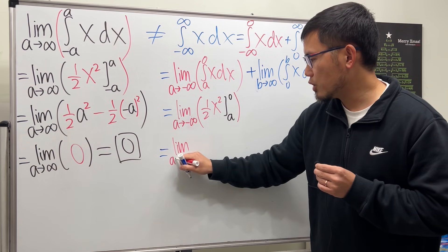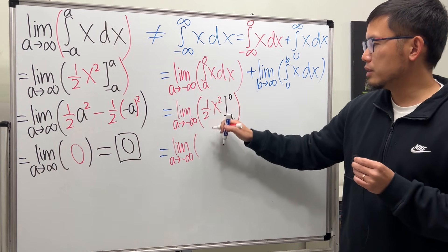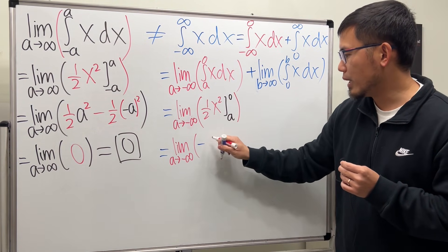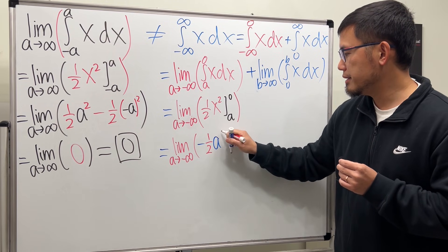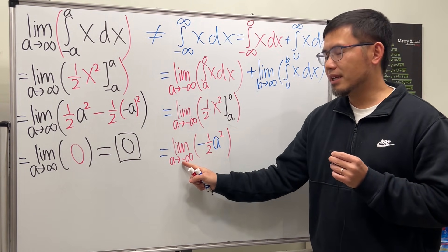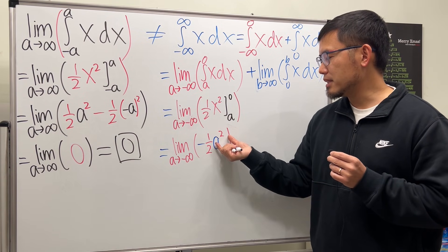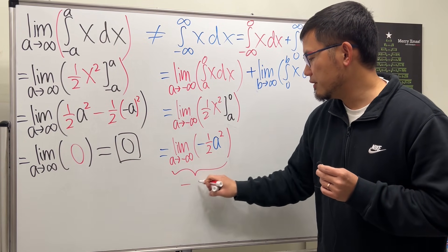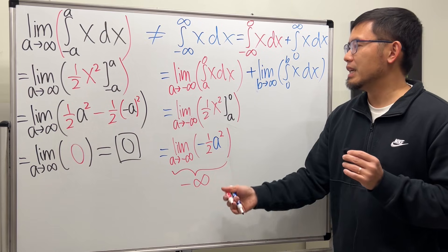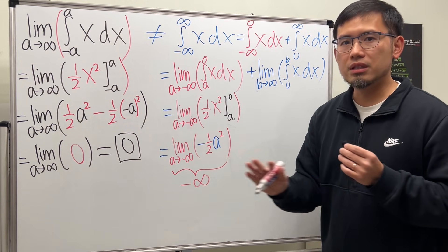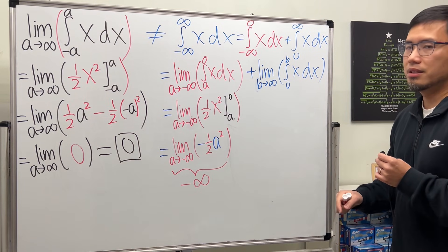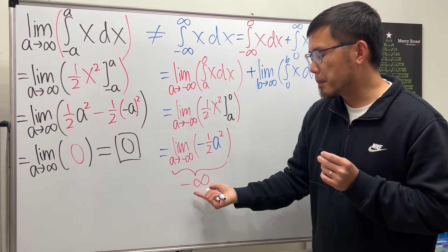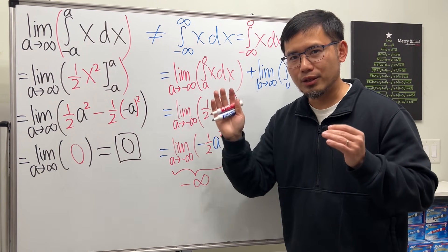This gives us the limit as a goes to negative infinity of zero minus one half a squared. When you square a and take it to negative infinity, that's positive infinity, but with the negative sign it becomes negative infinity. So this part diverges. Once one part of the integral diverges, the whole thing is done — it diverges.